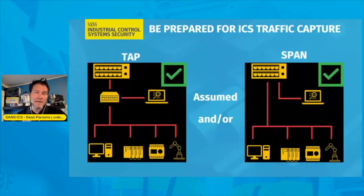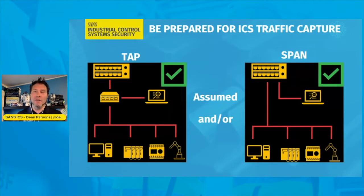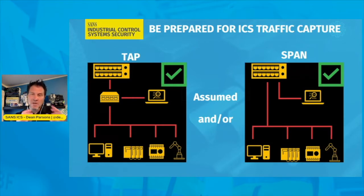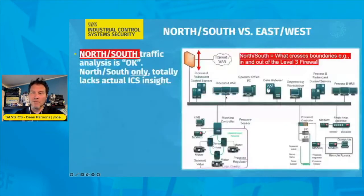We are making an assumption here: to be prepared for collection of data in the ICS network, you either have a tap in the environment to get data, or you have a span port on a fully managed switch that's configured, or you have both in different parts of your network. Let's jump into the north-south versus east-west traffic collection.